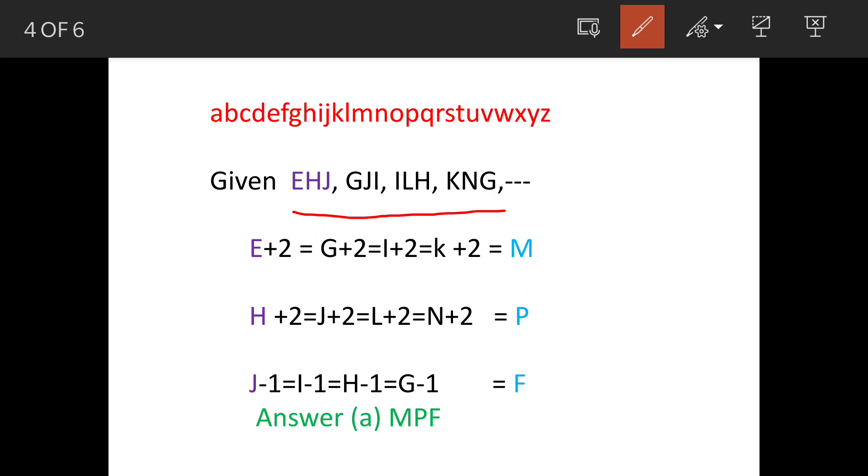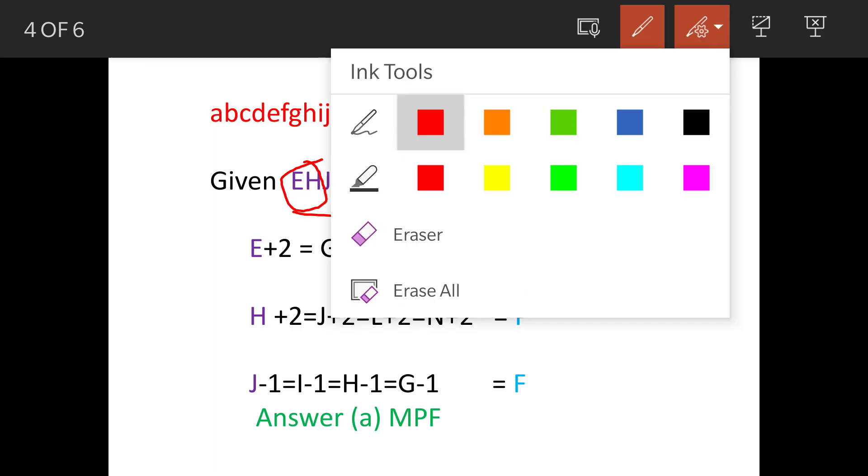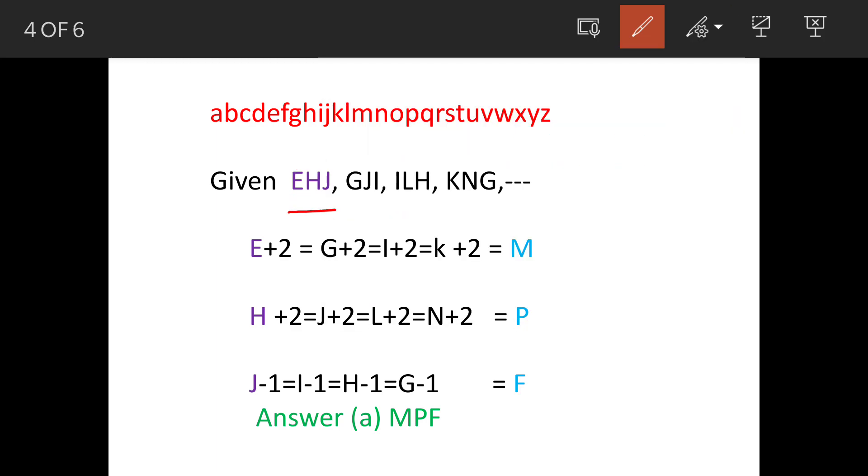First will be to find out the pattern among the groups only, but you'll find that these two groups are not following the pattern, so you discard this approach. Now you would try to establish patterns between two consequent groups.